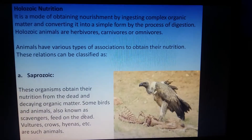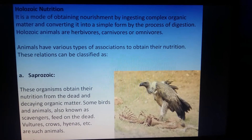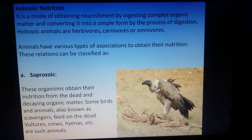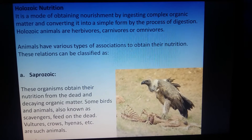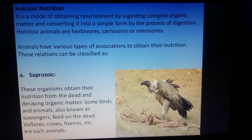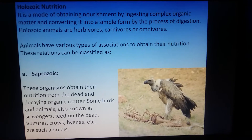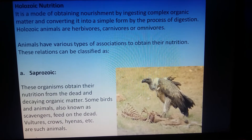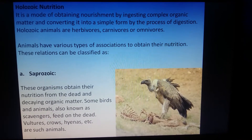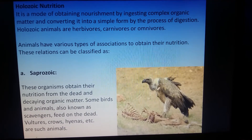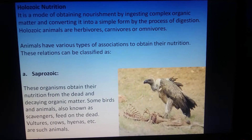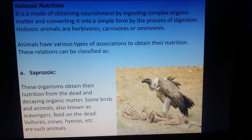Now let us see what holozoic nutrition is. All animals follow a mode of nutrition called holozoic nutrition. Holozoic nutrition means ingesting complex organic matter and converting it into simpler form with the help of digestion. Whatever we take in is complex organic matter.